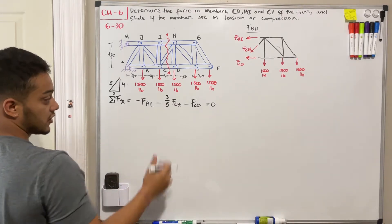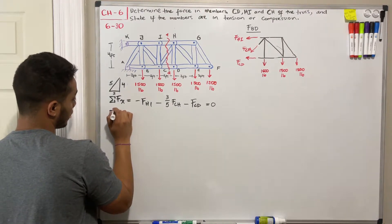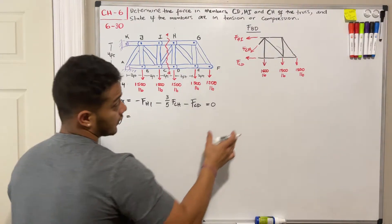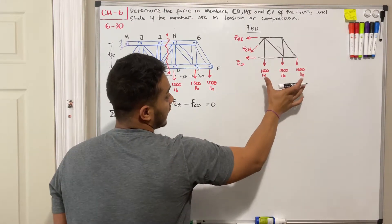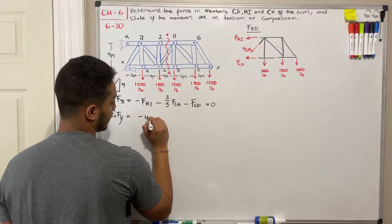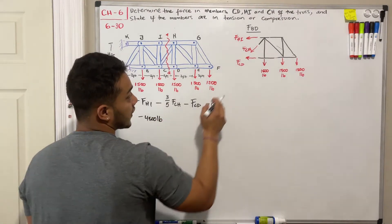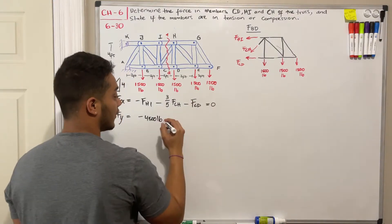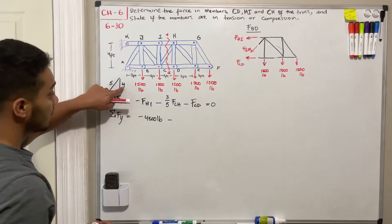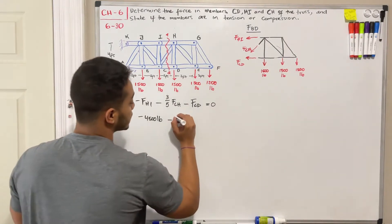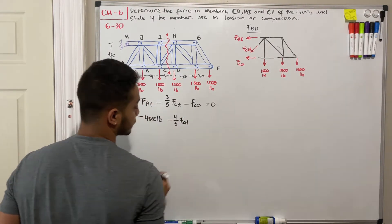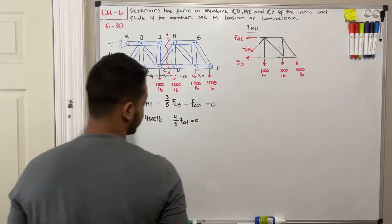And I'm going to keep going with my sum of forces in the Y direction. And what do we have? In the Y direction, we got these negative forces. That if we add them up will be 4500 pounds. And we also got the negative of the vertical component of FCH. How much is the vertical component? It's four out of five. So we got four out of five of FCH. And all this should be equal to zero.